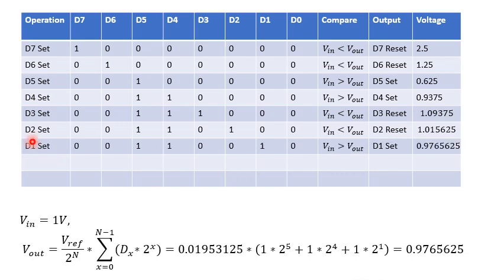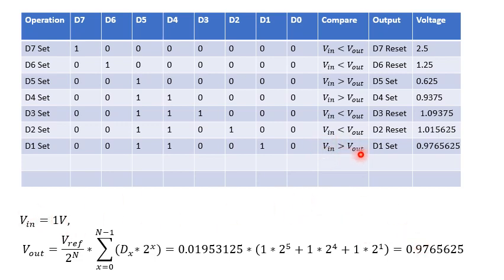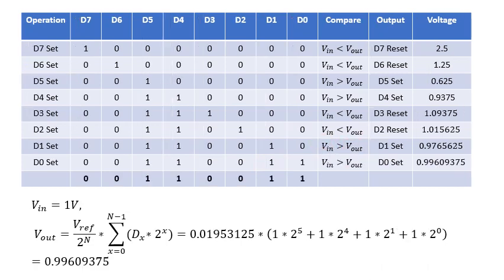Moving forward, D1 is set. D2 is reset from the previous step and D5, D4 remain set. With D5, D4, and D1 set, Vout equals 0.01953 × (2^5 + 2^4 + 2^1), giving approximately 0.9765 volts. Since Vin is greater than Vout, D1 is kept set.